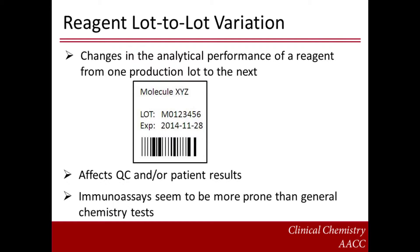References 3 through 6 at the end of this presentation provide examples of lot-to-lot variability that have been observed for insulin-like growth factor 1, prostate-specific antigen, anti-hepatitis antibody, and human chorionic gonadotropin immunoassays.